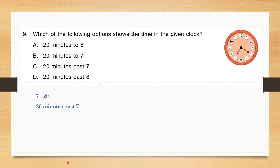Question number 9: Which of the following options shows the time in the given clock? The given clock shows 7:20, which is 20 minutes past 7. So the correct answer is option C.